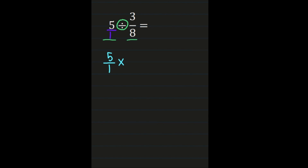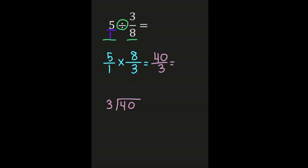The reciprocal of three-eighths is eight-thirds. Once we have our problem set up, we're multiplying fractions: numerator times numerator and denominator times denominator. Five times eight is forty, and one times three is three. So we get forty-thirds. If you can leave your answer as an improper fraction, you're done. But we're going to practice turning this into a mixed number. Your numerator goes on the inside and your denominator goes on the outside, because we're going to divide our numerator by the denominator.